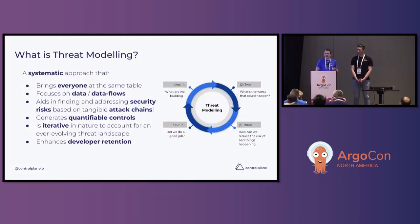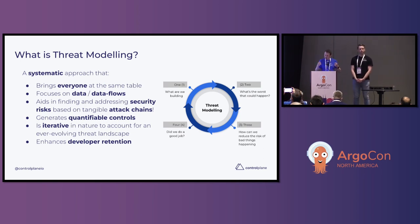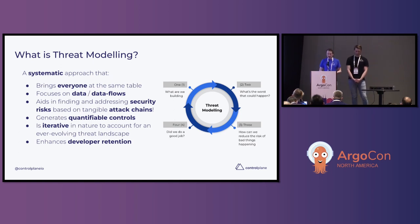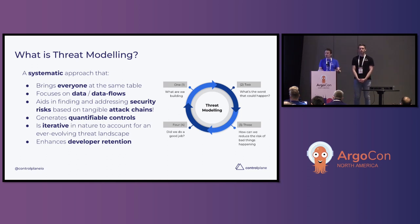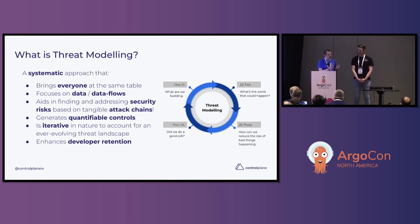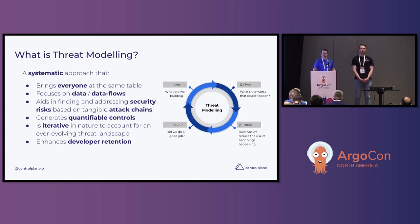A threat modeling overview. Threat modeling is a systematic approach we can take to our IT systems where we codify what can go wrong and devise mitigations which end up reducing risk. Threats can lead to risks, risk can be quantified, and we will always be left with some element of residual risk. It's the purpose of threat modeling to reduce these residual risks in line with something acceptable in our risk management framework and in line with our risk appetite as an organization. It aids in finding and addressing security risks based on attack chains and attack trees, and controls will be quantifiable. We can understand the impacts of implementing or not implementing certain controls and communicate this with assurance and compliance teams, and ensure that we are within that risk appetite.